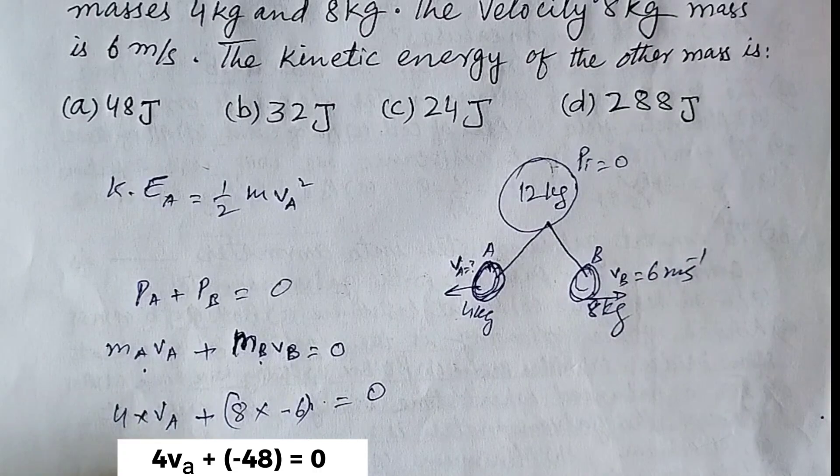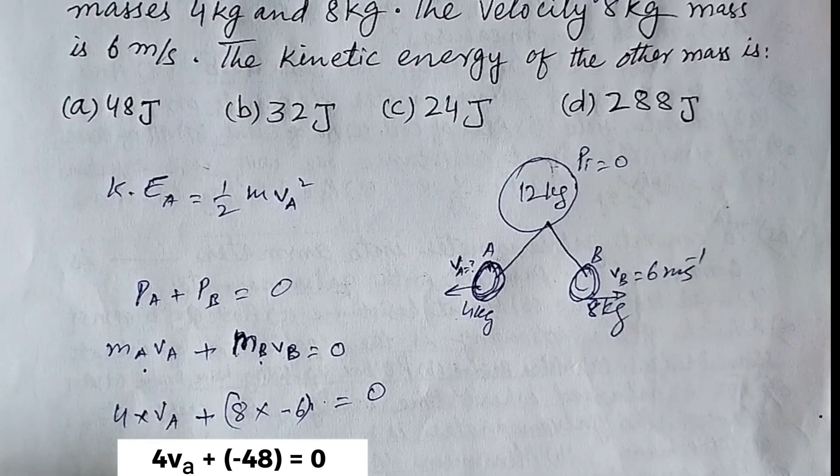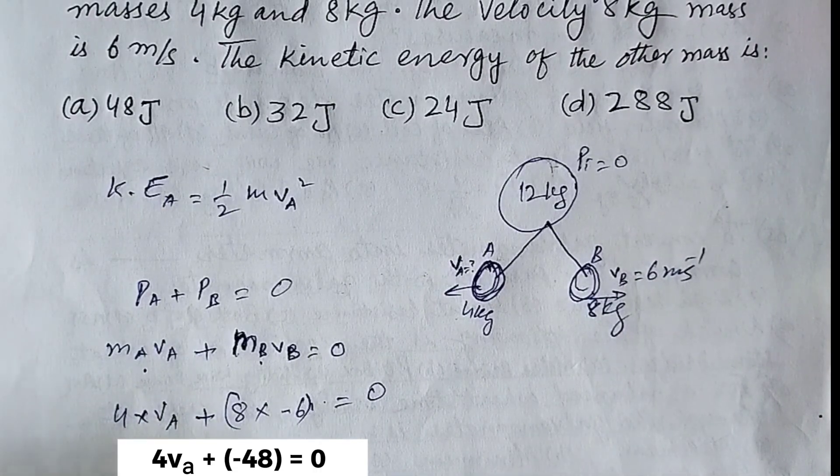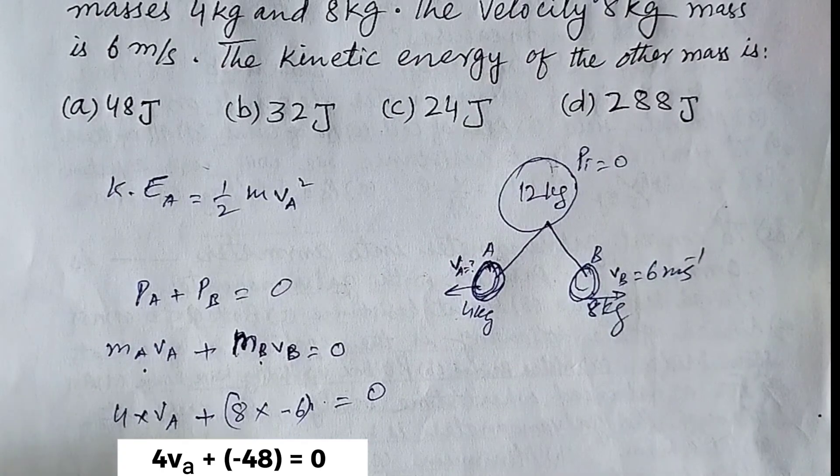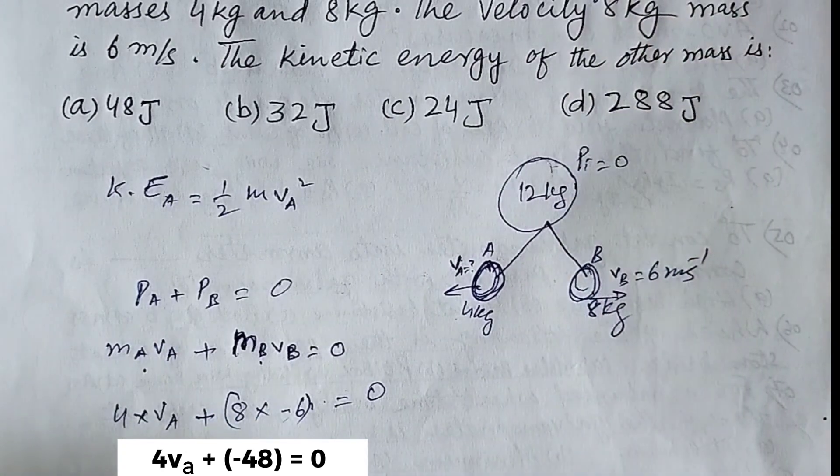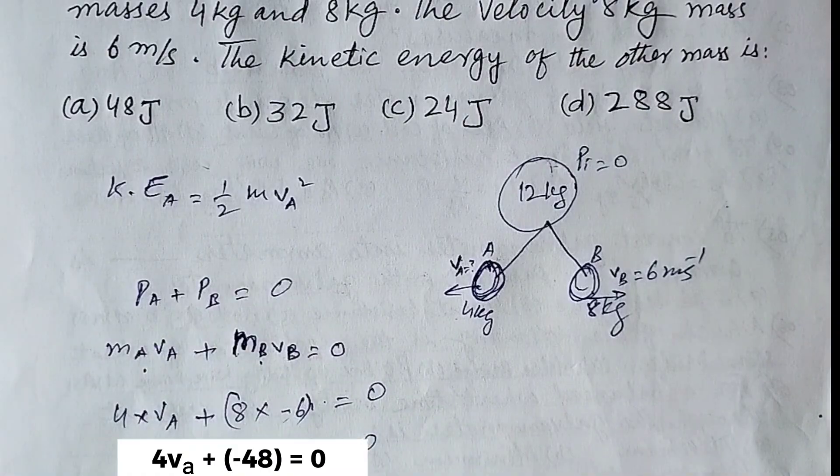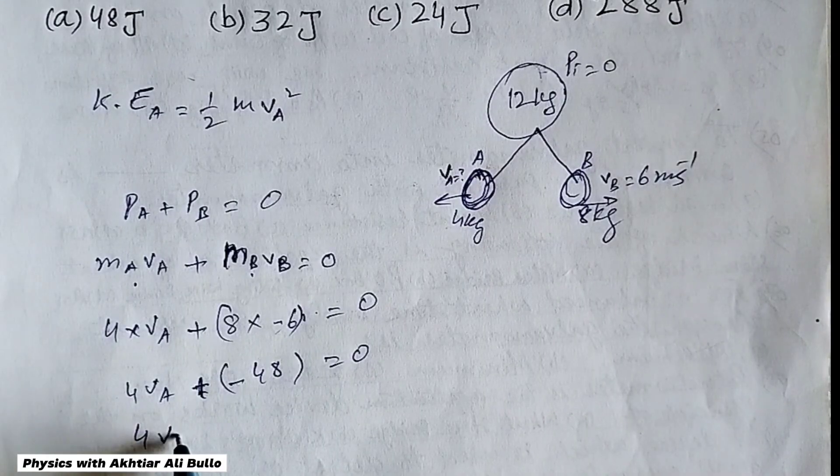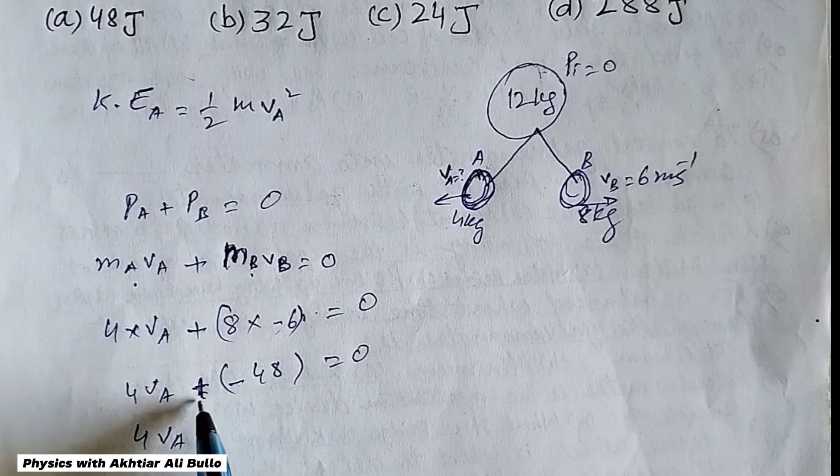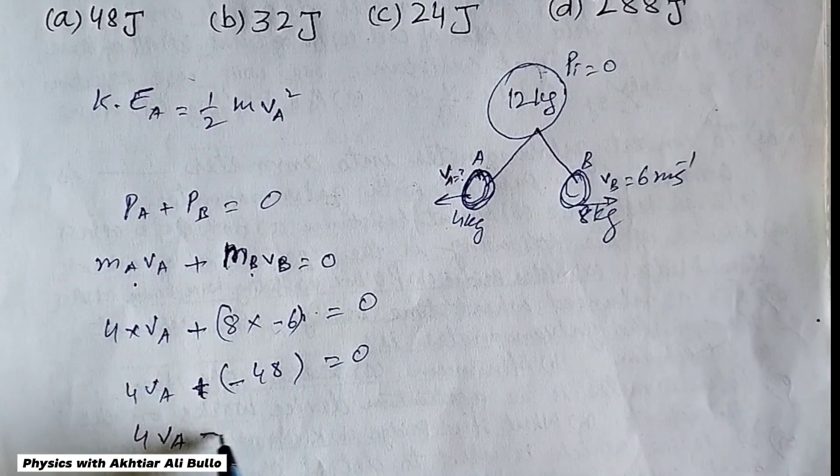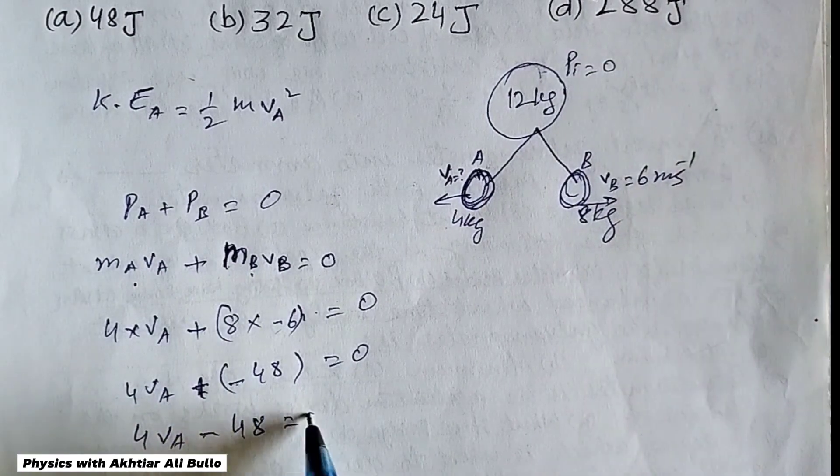4 into vₐ plus into minus 48 is equal to 0, so 4 into vₐ minus 48 is equal to 0.